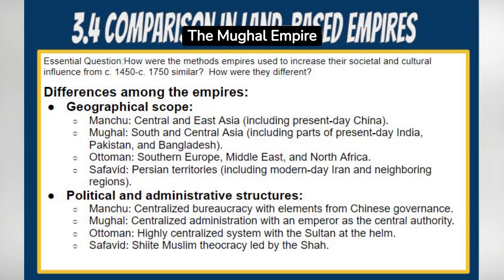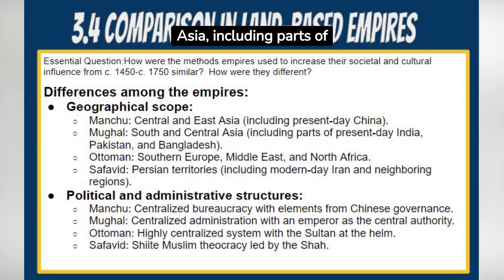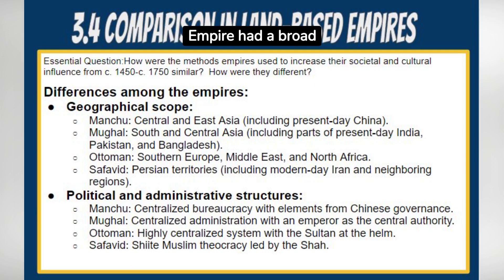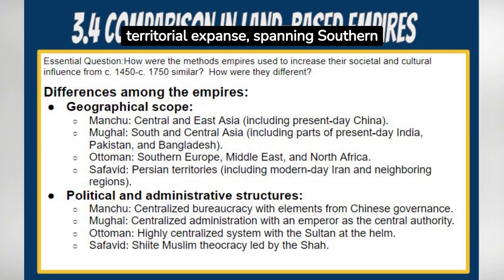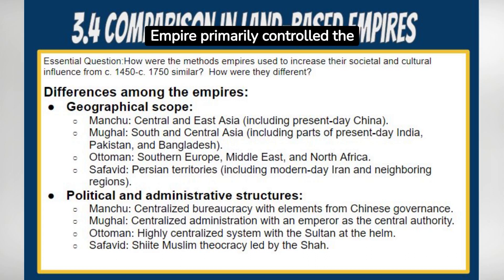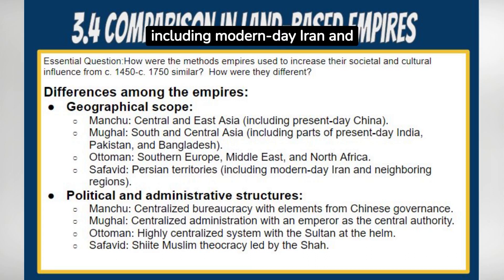The Mughal Empire encompassed South and Central Asia, including parts of present-day India, Pakistan, and Bangladesh. The Ottoman Empire had a broad territorial expanse spanning Southern Europe, the Middle East, and North Africa. The Safavid Empire primarily controlled the Persian territories, including modern-day Iran and parts of neighboring countries.